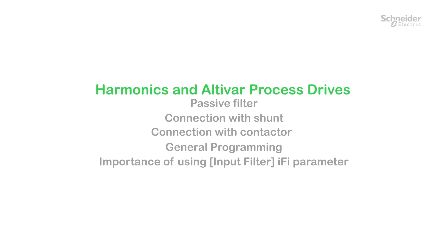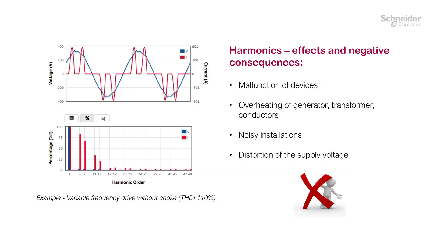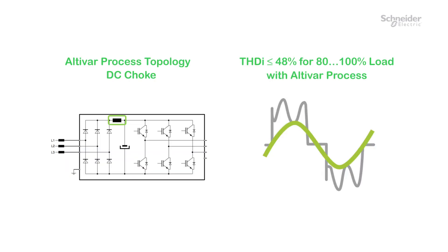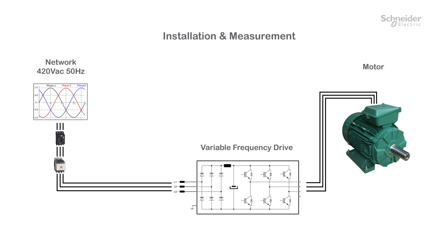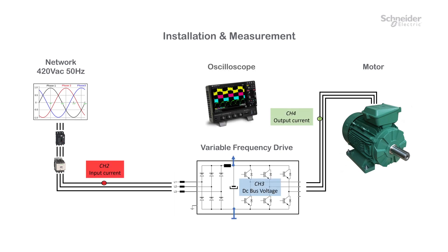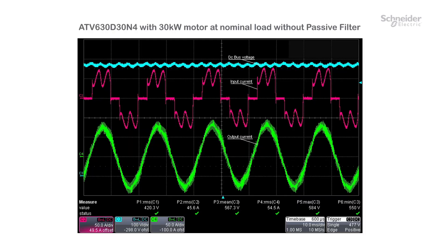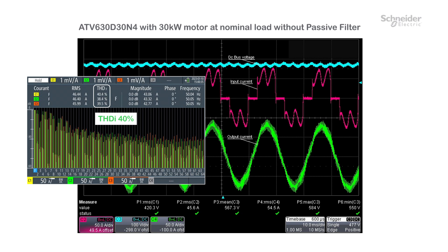Harmonics and Altivar Process Drives. A variable frequency drive alone generates harmonic currents on the mains supply, which has negative effects on the installation. Altivar Process Drives mitigate harmonics to less than or equal to 48% thanks to the embedded low harmonic DC choke. Here is the installation diagram with the measuring points: input current, DC bus voltage after the rectifier, and output current. We start the drive without passive filter at 50 Hz with a 30 kW motor at nominal load. THDI is measured at about 40%.